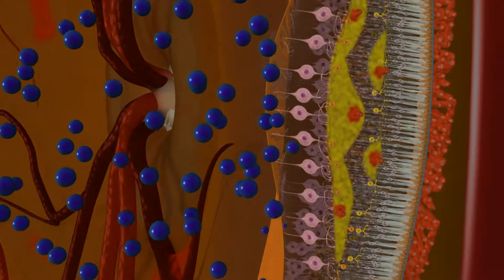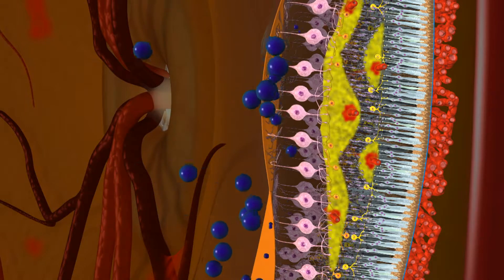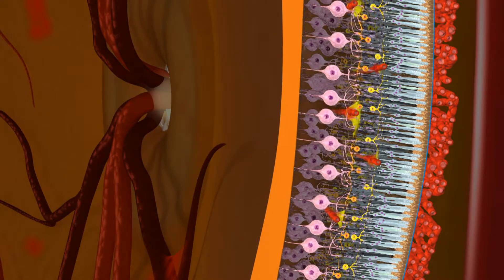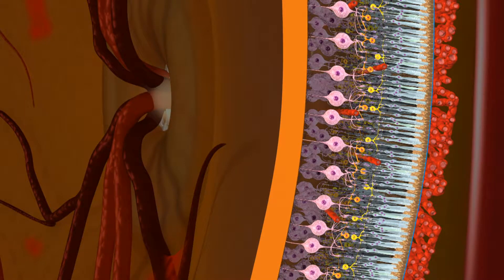Here the medication binds to VEGF, blocking the signal that causes blood vessels to leak. With repeated injections, the fluid dries up and vision improves.